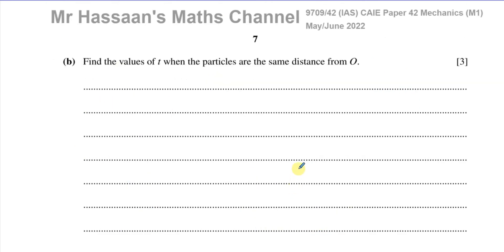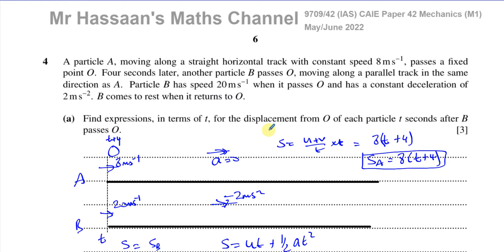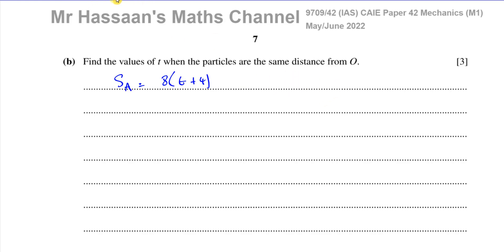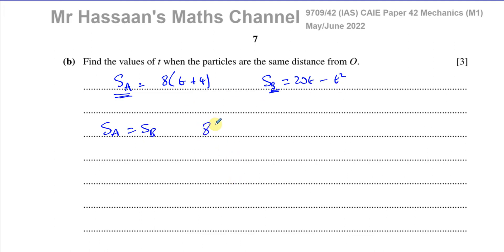For part B, we need to find the values of T when the particles are the same distance from O. We set SA equal to SB, so 8 times (T plus 4) equals 20T minus T squared. This gives us a quadratic equation to solve.